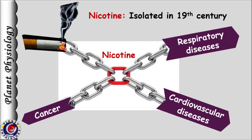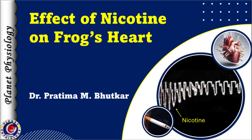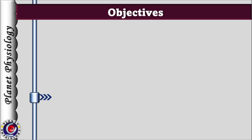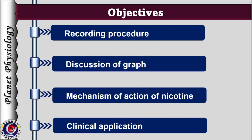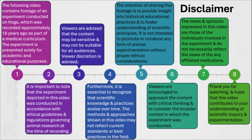In today's experiment, we will analyze how nicotine affects the frog's heart, offering insights into its autonomic regulation and clinical implications. We will first observe the procedure for recording the effect of nicotine, then analyze the graph and study its mechanism of action, and finally discuss the clinical applications. Please take a moment to read the disclaimer — these experiments were recorded nearly 18 years ago for academic purposes only.